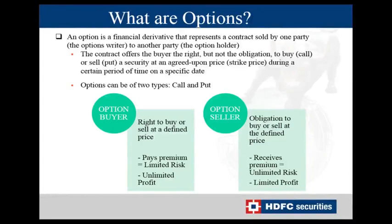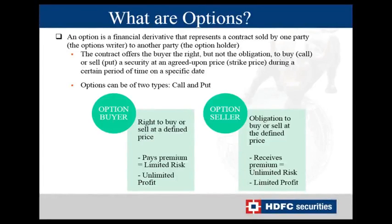Now let us understand what options are. As in futures, we have a buyer and a seller. An option is a financial derivative that represents a contract sold by one party — the options writer or seller — to another party — the options holder or buyer. For example, we have Mr. A who is holding shares of ABC Limited, and Mr. B who wants to buy 500 shares of ABC from Mr. A. But Mr. B does not have all the money at the moment to buy 500 shares.